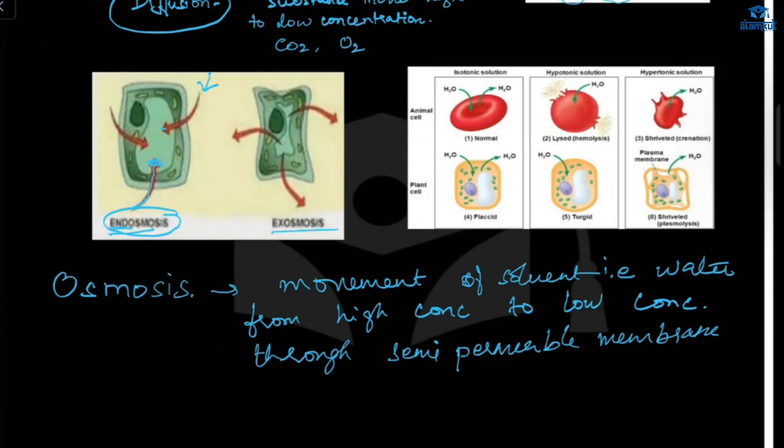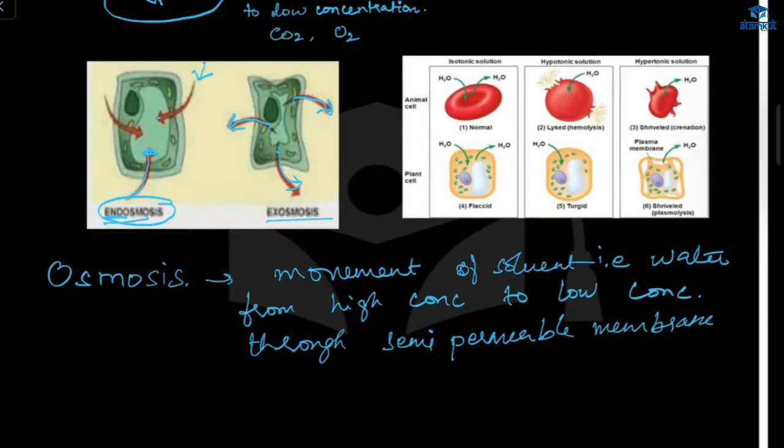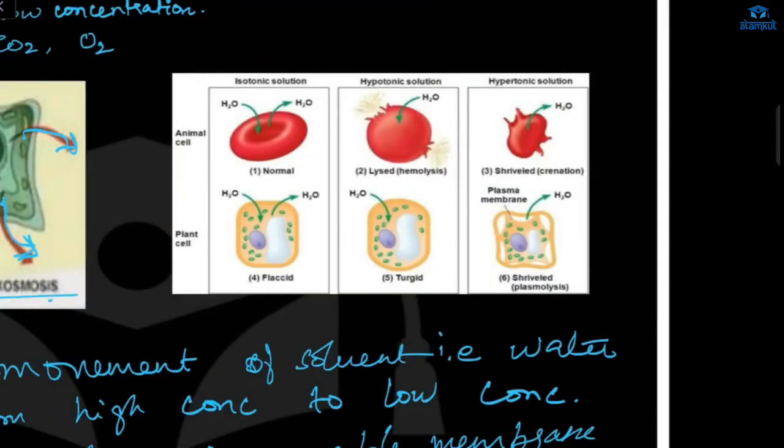And in the second case, in exosmosis, the cell is filled with water. So what happens here? The water will get outside because the surrounding concentration is low. And this movement is called exosmosis because water is getting outside the cell.